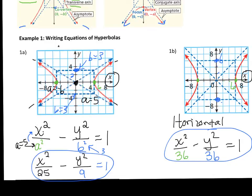This one is a 6 by 6 square. For hyperbolas, it doesn't really matter which way your rectangle is tall, long, or if it's a square — you can't tell if it's going to be vertical or horizontal from the shape of that box. You really just have to tell by which letter is first, the x or the y.